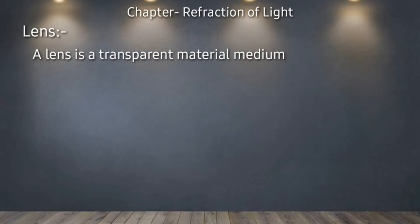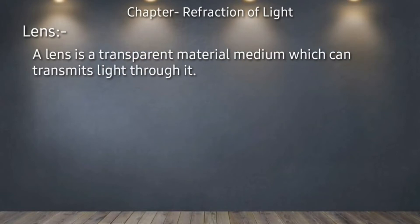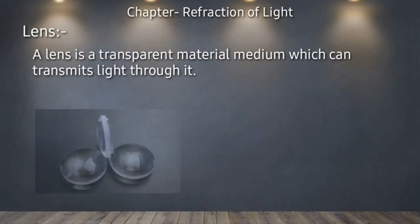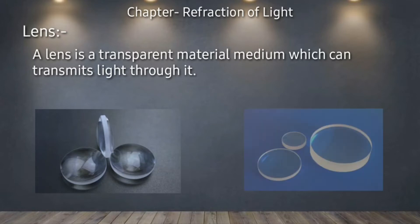A lens is a transparent material medium which can transmit light through it. A lens is a material which is fully transparent. We use spherical lenses and divide them into two parts: the convex lens and the concave lens.